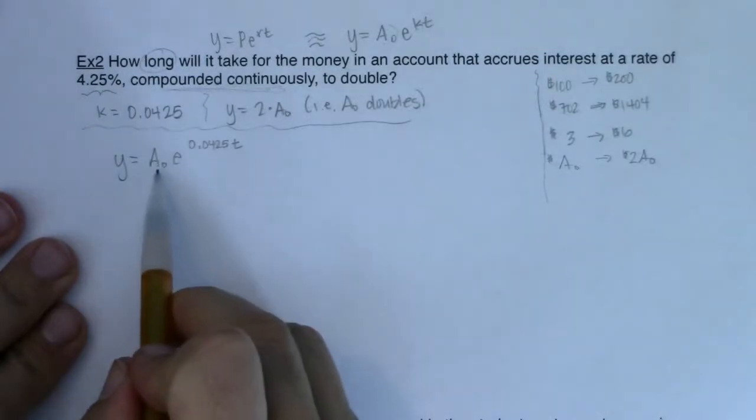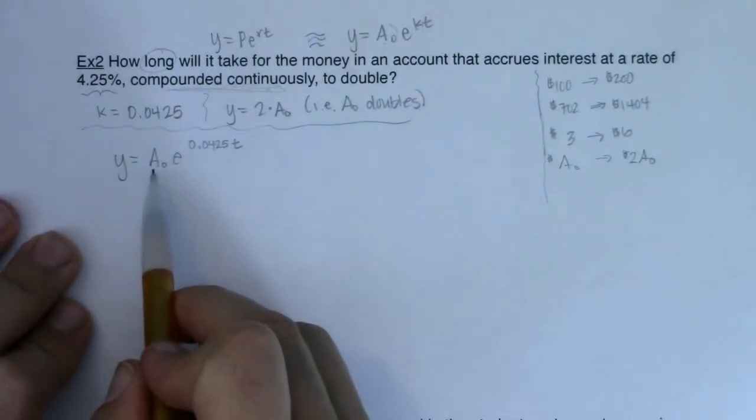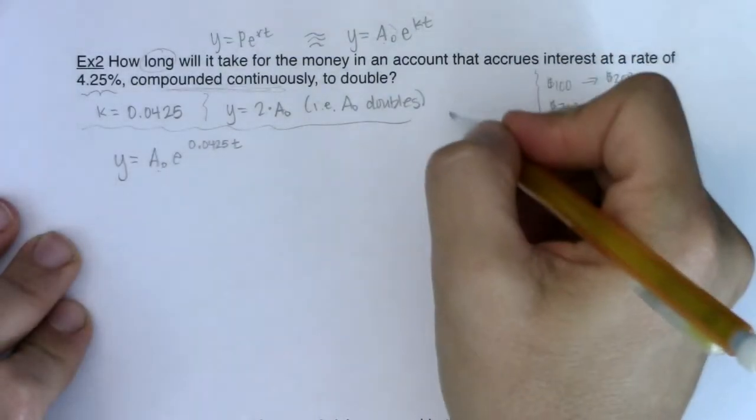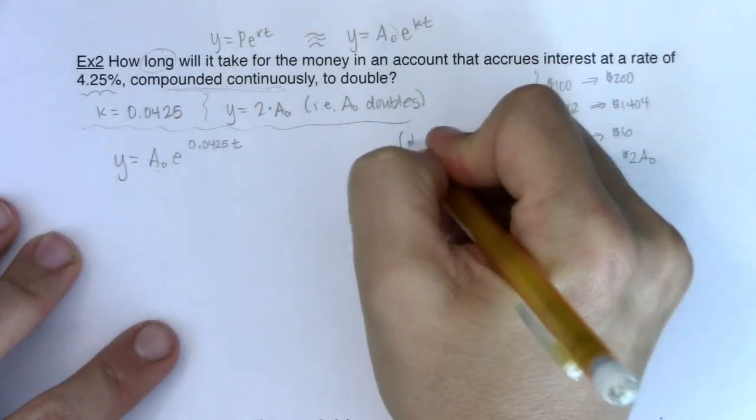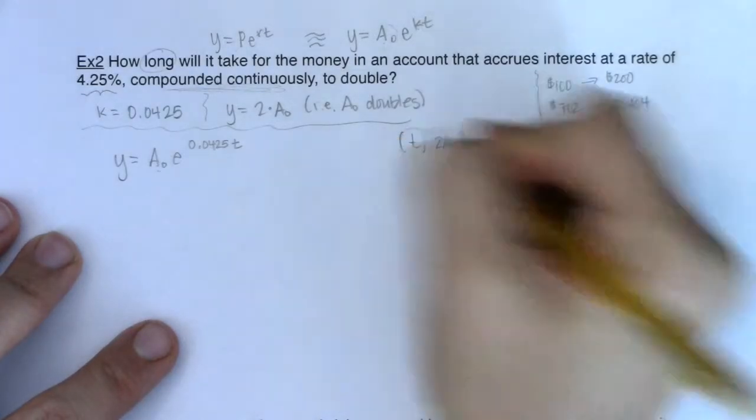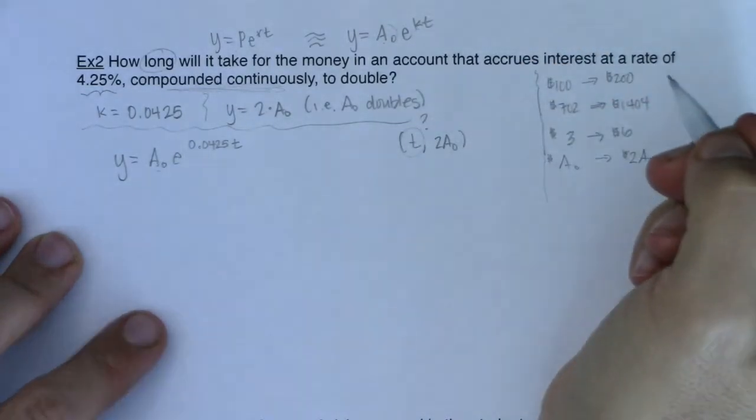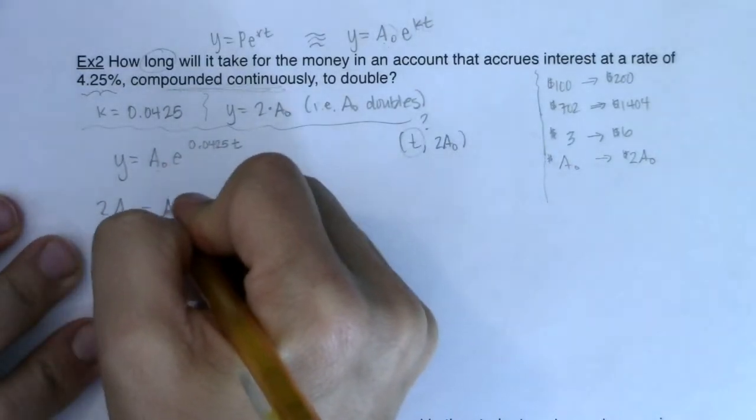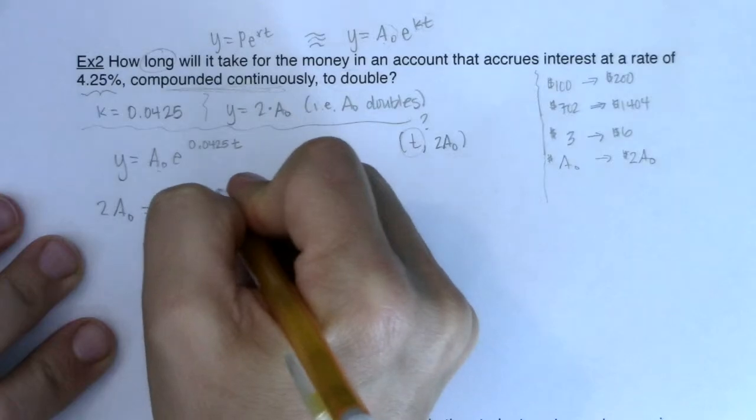Okay, the problem is in this example, they did not give us A sub zero, but they told us we want to double. So what they're asking us is, what is the t value when we double and get to A sub zero? That is the variable we're solving for. So I'm going to plug two times A sub zero in for my y value and see when this thing doubles out.